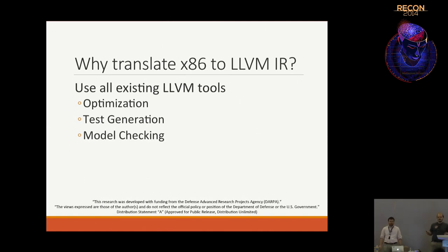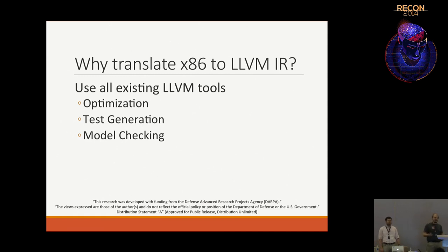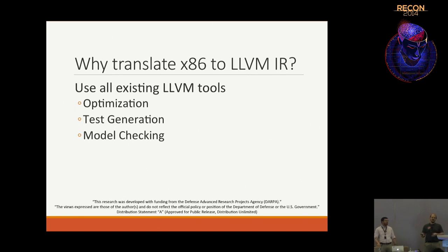So why would we translate x86 code into LLVM IR? It will make our analysis easier, and we can take existing tools. Inside of the LLVM framework there are all the optimizations and analyses you'd find in a compilers textbook: computing loop headers, identifying dominance frontiers, simplification, constant folding, dead code elimination. If you were to write your own intermediate representation — as many binary analysis projects have — you'd wind up designing a language, designing a translator, and then reimplementing everything that's in an existing compiler. We didn't need to do that, which was great. There are also existing tools that perform checking on LLVM IR, like KLEE for symbolic execution and an LLVM tool that performs bounded model checking.